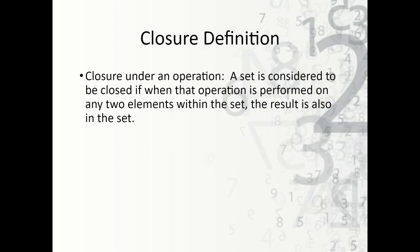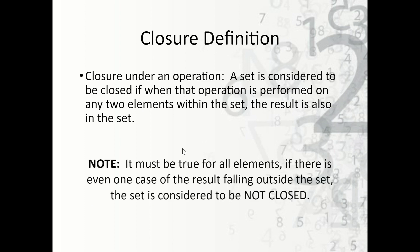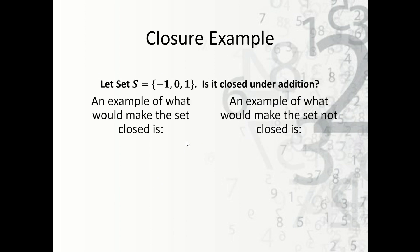Now, closure. What does closure mean? Closure under an operation means a set is considered closed if, when that operation is performed on any two elements within the set, the result is also in the set. This must be true for all elements. If there is even one case where the result falls outside the set, then it is considered not closed.